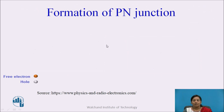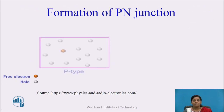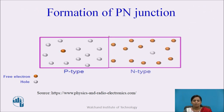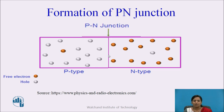When P-type semiconductor is joined to the N-type semiconductor, there is a formation of a P-N junction diode. The boundary or interface between this P-type and N-type semiconductor is called the P-N junction.